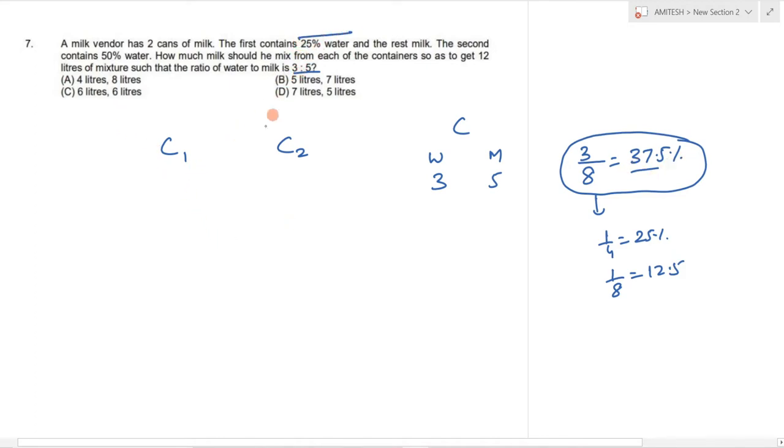Container 1 has 25% water, which means 75% milk. Container 2 has 50% water and 50% milk. The final mixture should have 37.5% water.